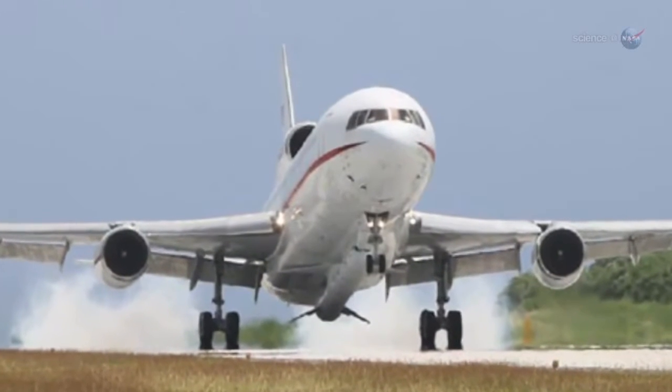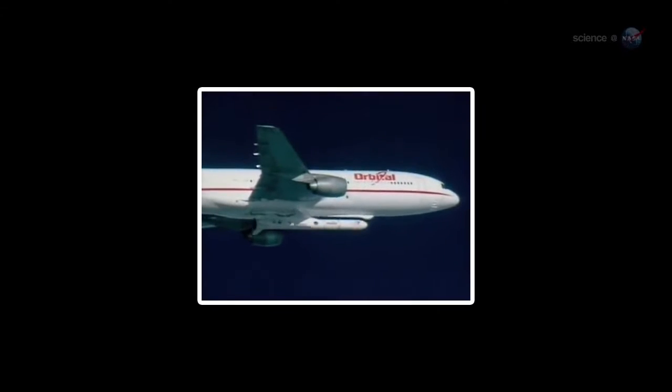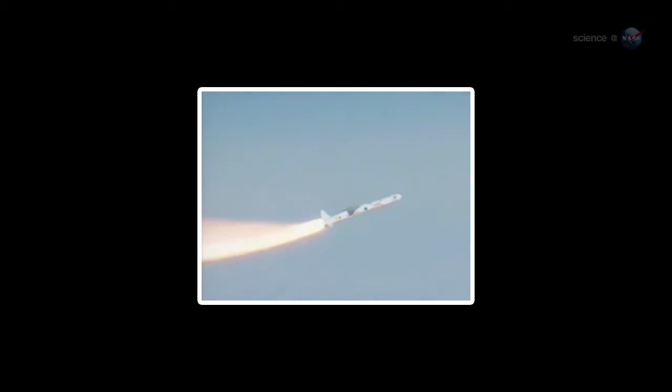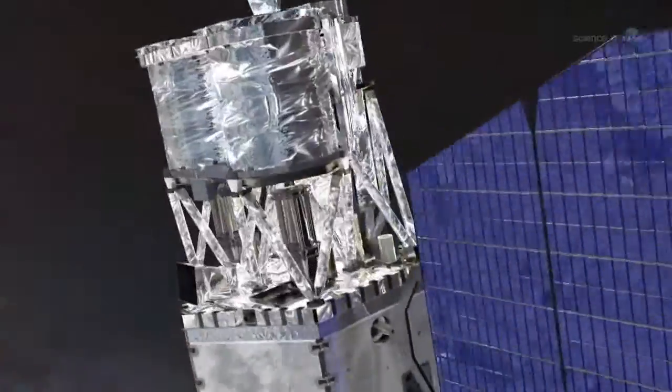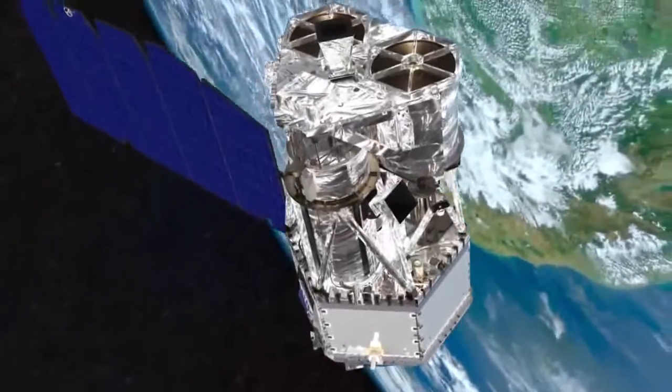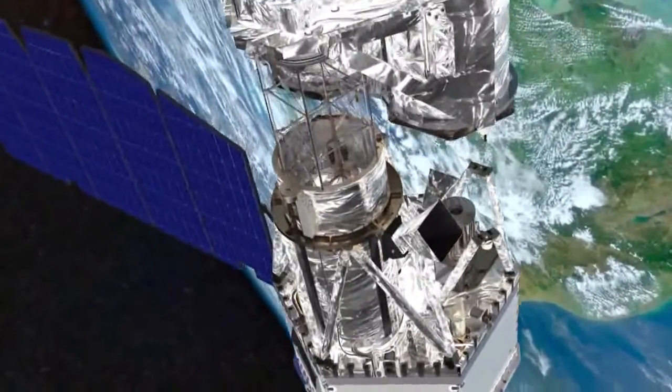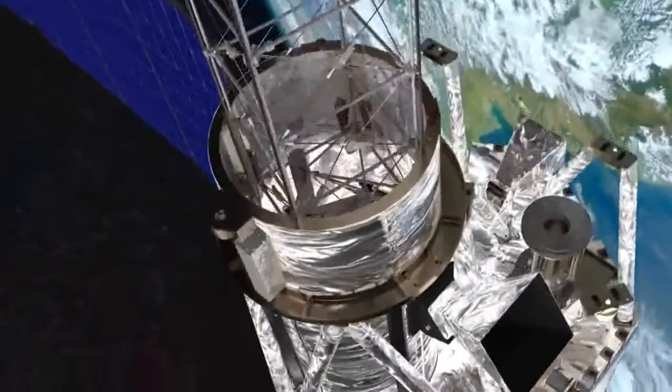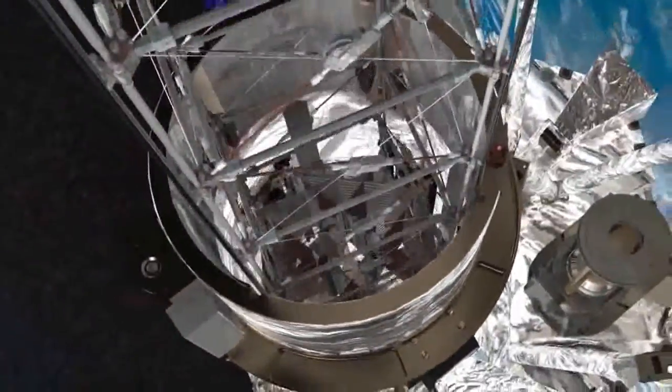Launched on June 13, 2012, onboard a Pegasus XL rocket dropped from an airplane high above the Pacific Ocean, NuSTAR is a small explorer satellite that carries the first space telescope that can focus very high-energy X-rays. NuSTAR will produce images roughly 100 times sharper than those possible with previous high-energy X-ray telescopes.